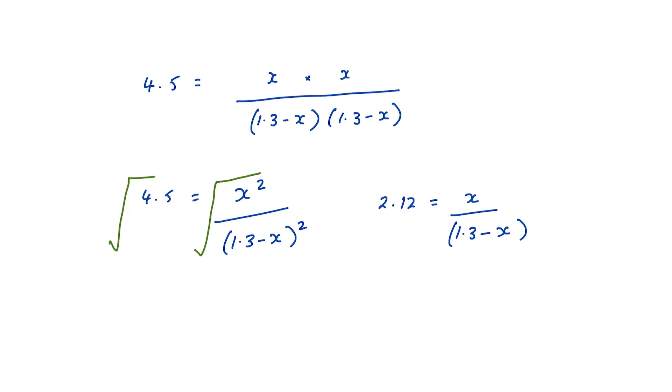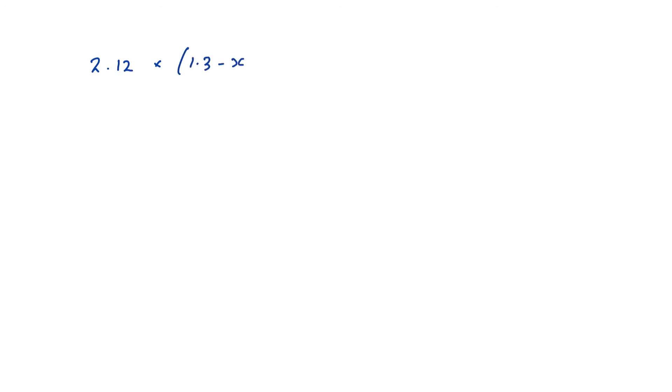I'm now going to take the 1.3 minus x over to the left hand side so my expression becomes 2.12 multiplied by 1.3 minus x is equal to x. I'm going to multiply 2.12 by 1.3 and 2.12 by x, so that becomes 2.756 minus 2.12 x equals x. I can now take the 2.12 x over to the other side. 2.756 is equal to 3.12 x, so x must equal 0.883.